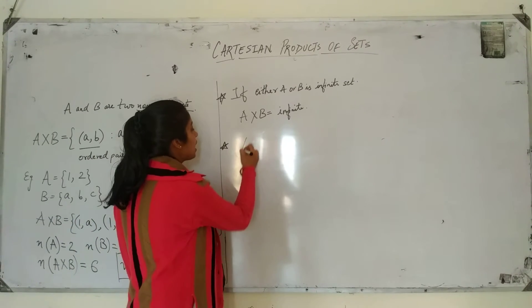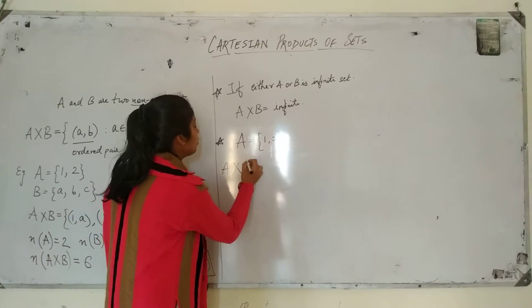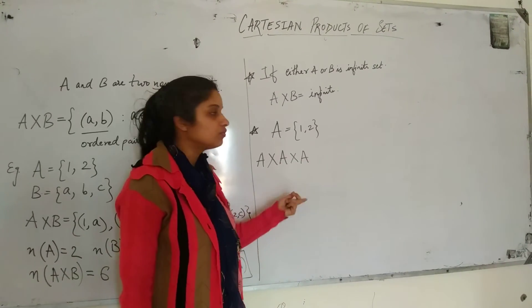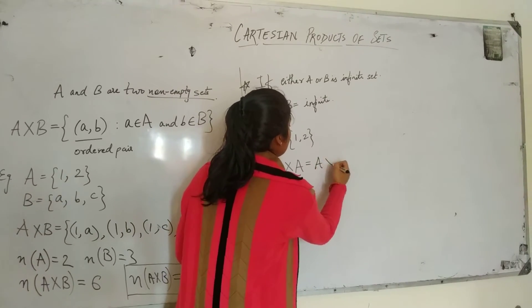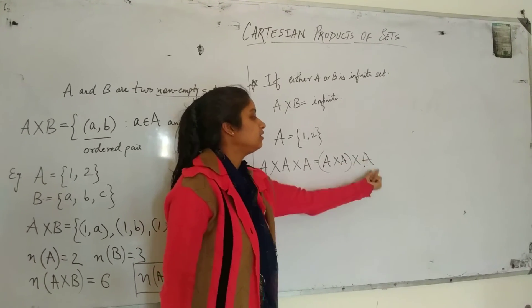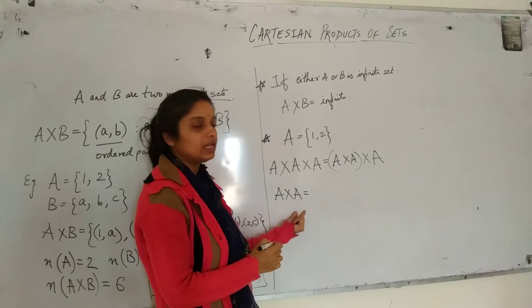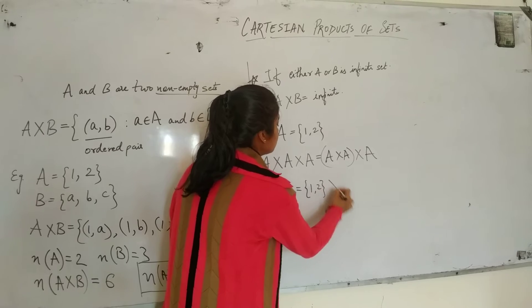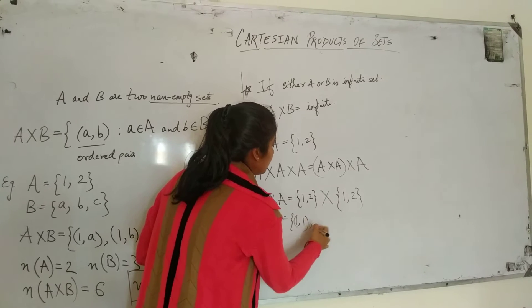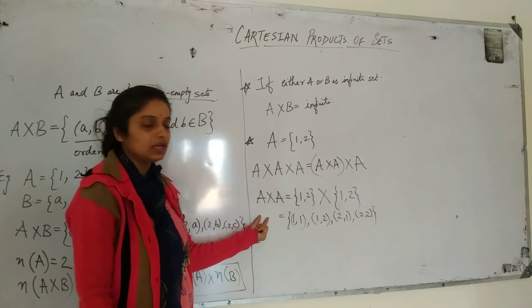Now, let us take set A equal to {1, 2} and find A cross A cross A. First, we find A cross A — the Cartesian product of A with itself. So from {1, 2} cross {1, 2}, we get the ordered pairs: (1, 1), (1, 2), (2, 1), and (2, 2). This is A cross A.